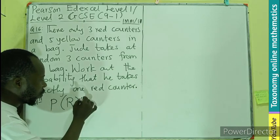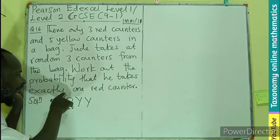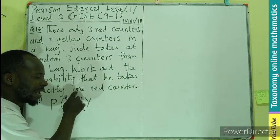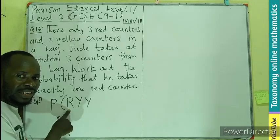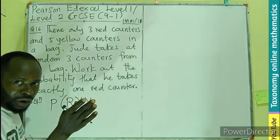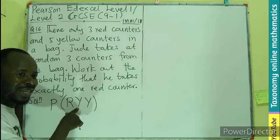Then the third one will also be yellow. Or it could be red. But in this case, we are talking of one red counter, exactly one. So either the first one is red, the remaining two is going to be yellow. So this probability, this and this and this.